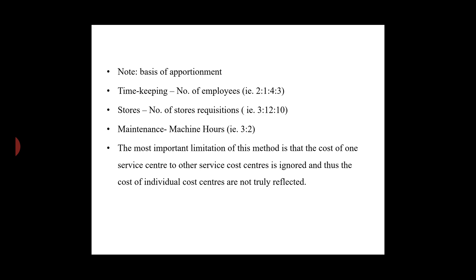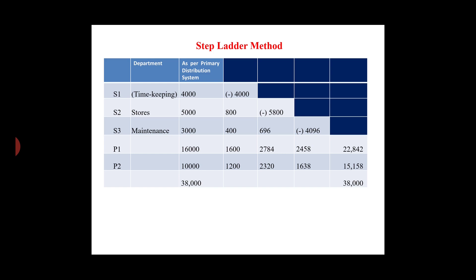In the step ladder method, we start with the primary distribution. As per primary distribution, we take the service department expenses and redistribute them step by step. The first service department in the step ladder is timekeeping, which has a primary distribution expense of 4,000.